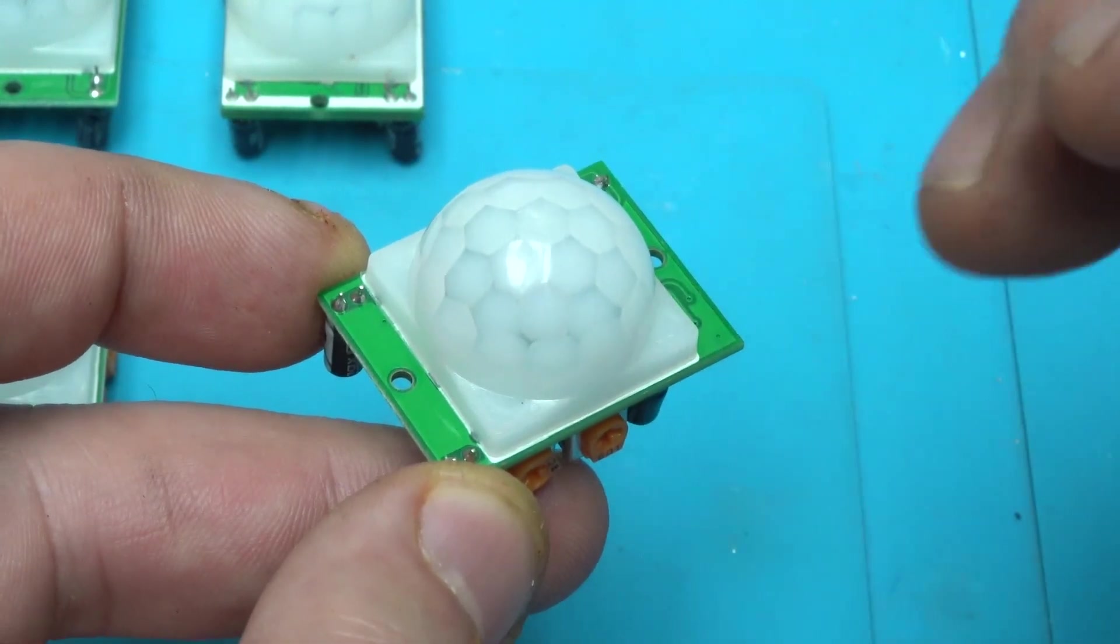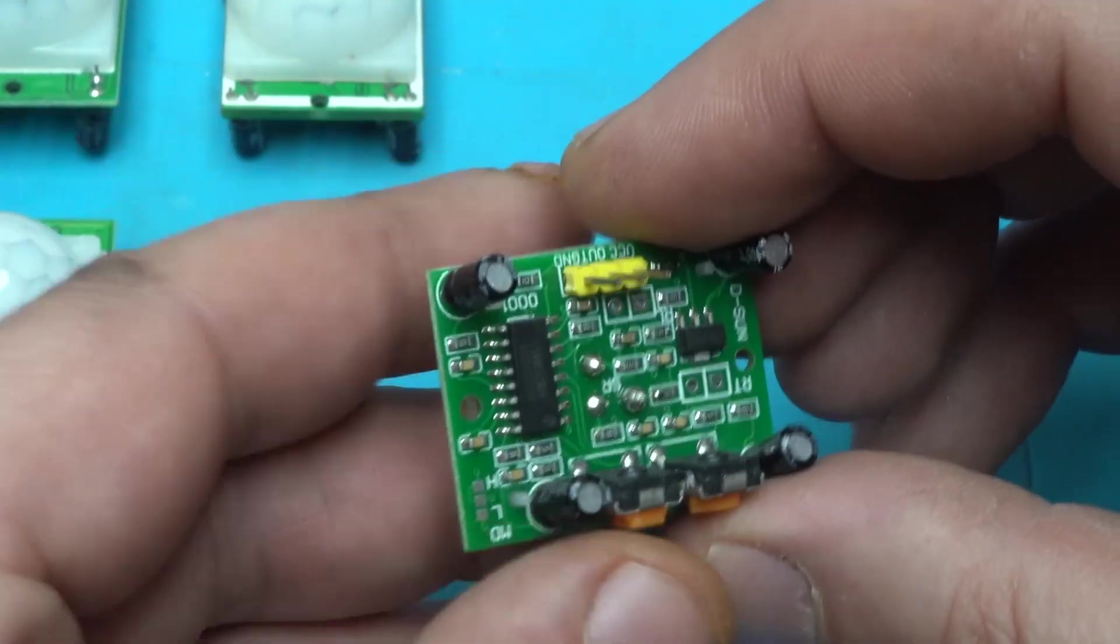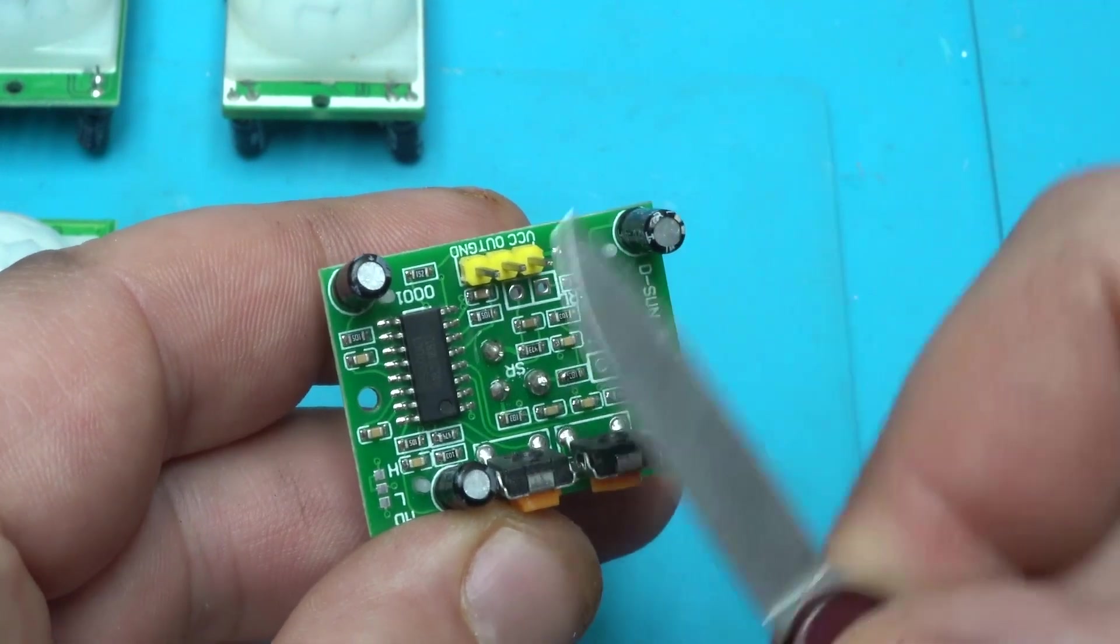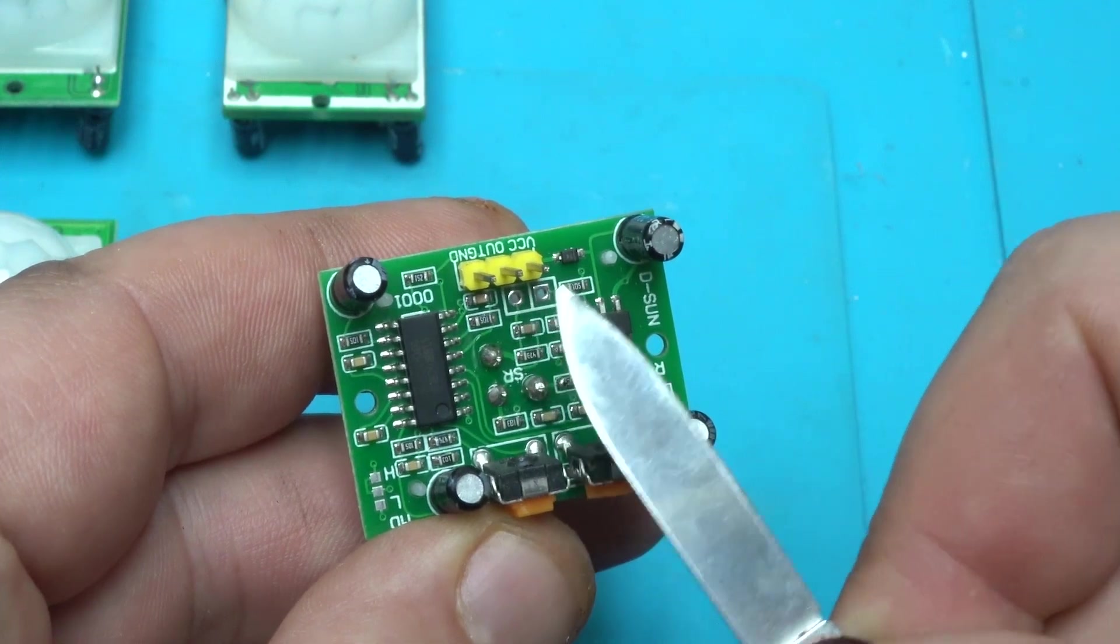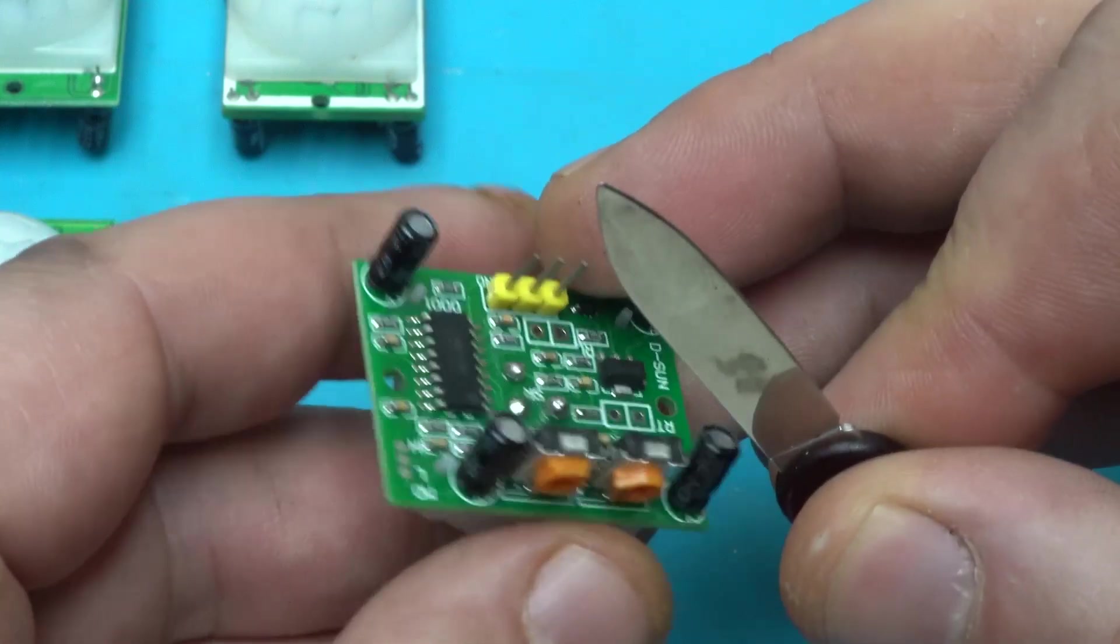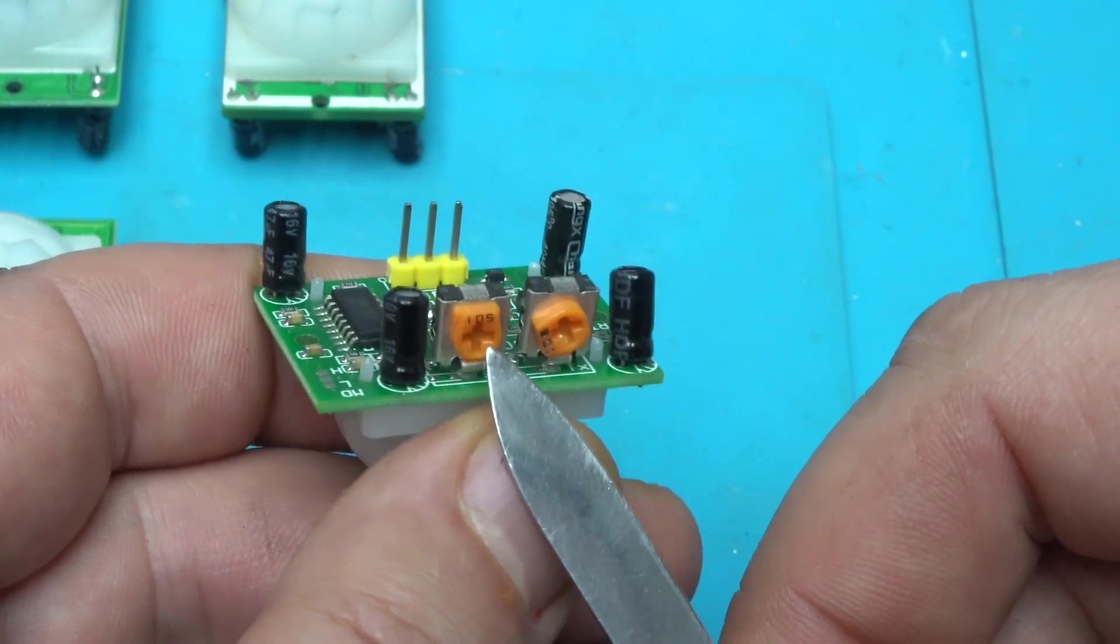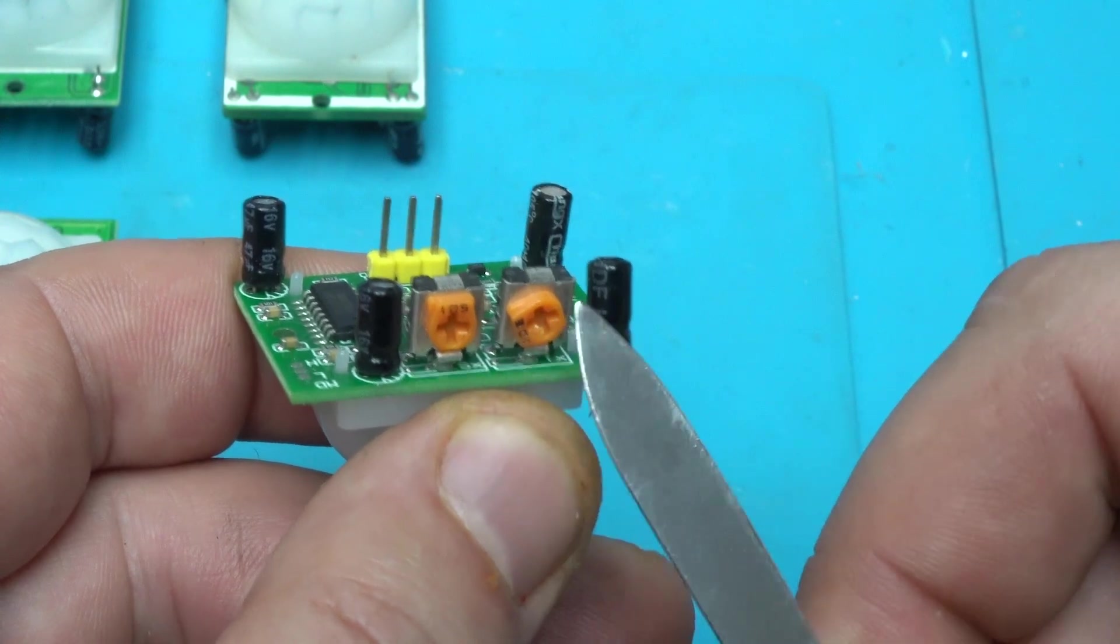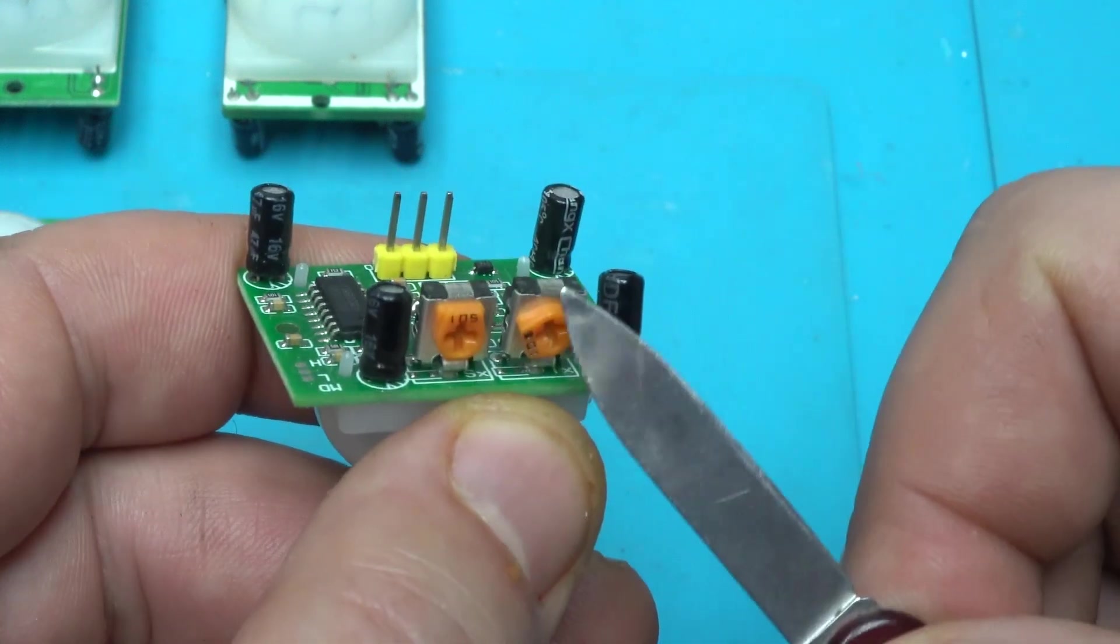Besides that, it can work with Arduino or without Arduino. It's simple, it needs only 5 volts to be powered on. From the left side we have a ground, the middle is out, and this is the positive 5 volts. We have two potentiometers, one of them is for adjusting the sensitivity or distance adjustment, and from the right we have the time delay adjustment.